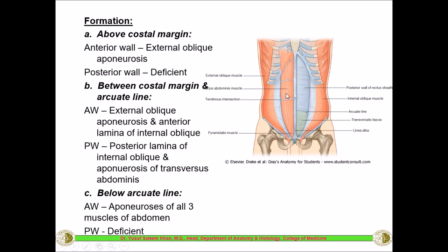Above the costal margin, the anterior wall of the rectus sheath is formed by the external oblique aponeurosis only, since the external oblique takes origin from the lower eight ribs and covers this region. Posteriorly it is deficient above the costal margin, because the rectus abdominis is directly adherent to the costal cartilages. So above the costal margin, there is only an anterior wall formed by the external oblique, and no posterior wall.